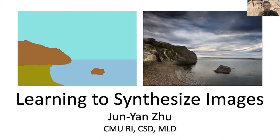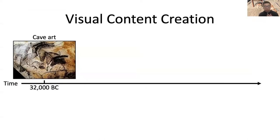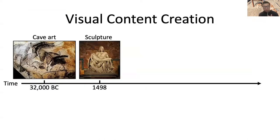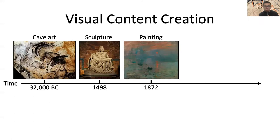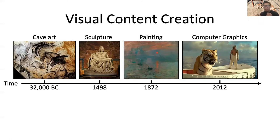Today I will talk about how we can use machine learning to help humans create visual content. Throughout history, people have created visual content in various forms, from ancient cave art, to sculpture, to impressionist paintings by Claude Monet, to more recently 3D computer graphics. This is one of my favorite movies, Life of Pi, which tells the adventure story of a little boy with a giant Bengal tiger.